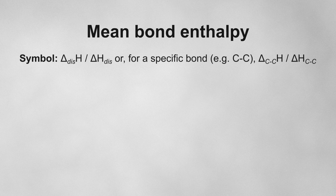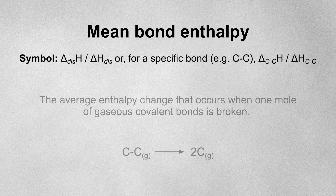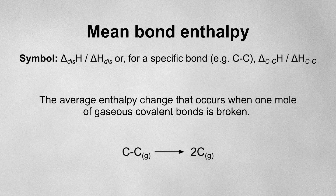Okay, let's jump into the definitions. The mean bond enthalpy is the average enthalpy change that occurs when one mole of gaseous covalent bonds is broken.